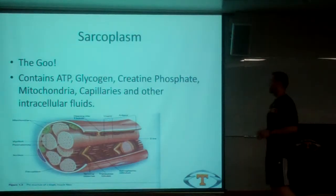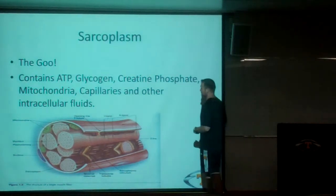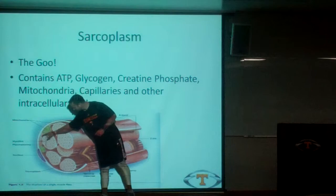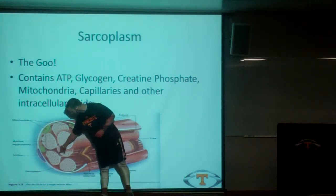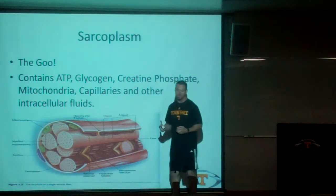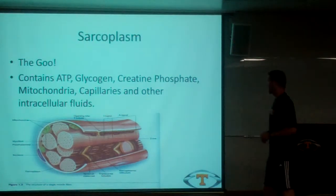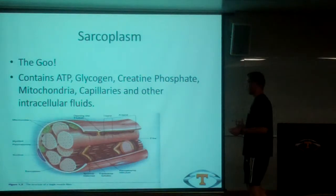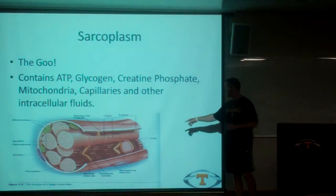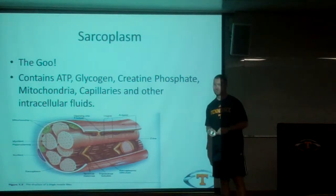What is the sarcoplasm? It's the goo — basically what surrounds your myofibrils. It's what's in between; it's not the myofibrils themselves. Everything else is the sarcoplasm. It contains your ATP, a lot of your energy sources — ATP, glycogen, creatine phosphates, mitochondria which is the powerhouse of the cell, your capillaries, your T-tubules, and a lot of your cellular fluids.